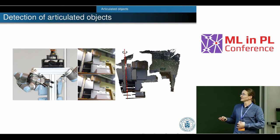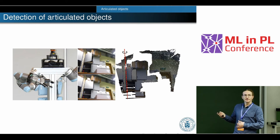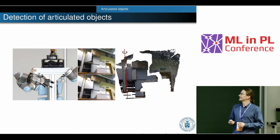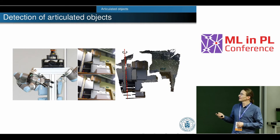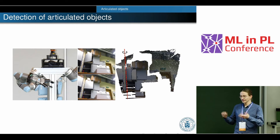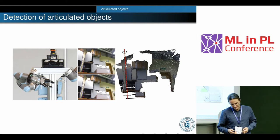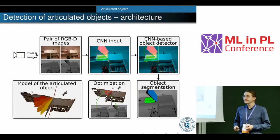We estimate the position of the joint, the type of the joint — whether it's a hinge joint or translational — the configuration, and the state of the articulated object. Here is how we do this: we use RGBD data from Kinect, Asus Xtion, or Intel RealSense. We take a pair of RGBD images, compute differential images, and provide them to the neural network.